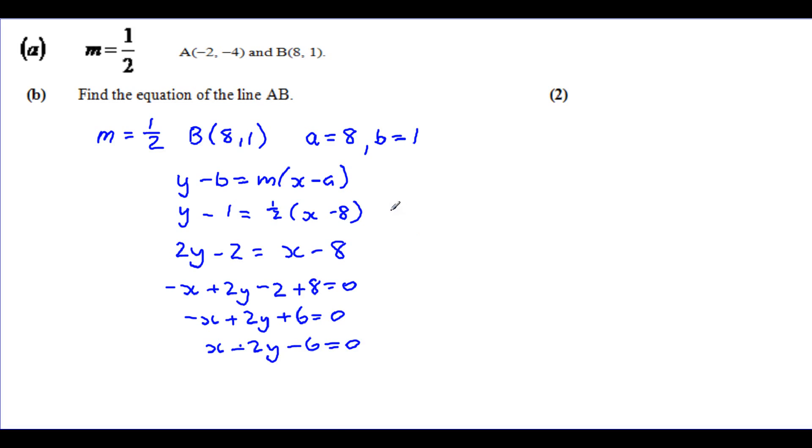Alternatively, if you had worked it from this point, you would have then got that Y minus 1 equals a half X minus 4, or that Y equals a half X minus 4 plus 1, or that Y equals a half X minus 3.